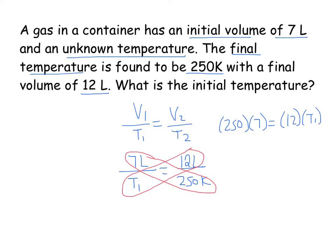If I solve for T1 here, it's going to be 250K times 7 liters, and that's going to give me 1,750. 1,750 is equal to 12 times T1. I'm going to divide both sides by 12,